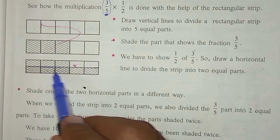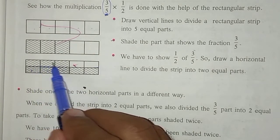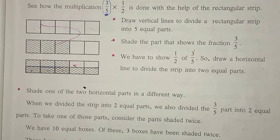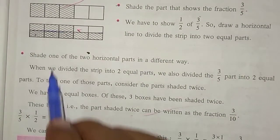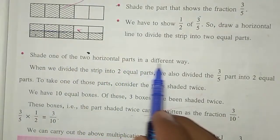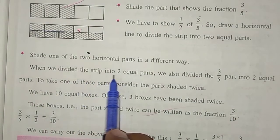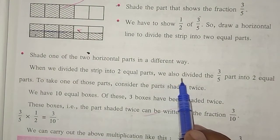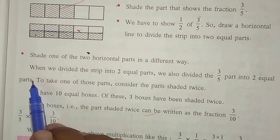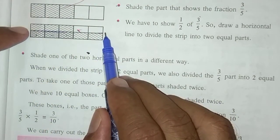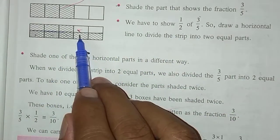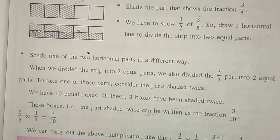Because of that you will see these 3 boxes are colored differently, these 5 are colored differently, and these 2 are vacant. Now we will understand the meaning of this exactly. When we divided the strip into 2 equal parts, we also divided the 3/5 part into 2 equal parts — we multiplied 3/5 by one half, meaning we halved 3/5.